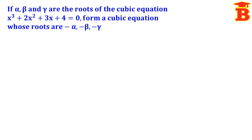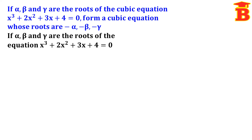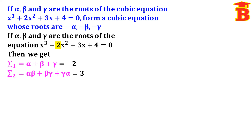Similarly, see the next problem. If alpha, beta and gamma are the roots of x cubed plus 2x squared plus 3x plus 4 equal to 0, form a cubic equation whose roots are minus alpha, minus beta, minus gamma. The equation is the same, so sigma 1 equals alpha plus beta plus gamma equals minus 2; sigma 2 equals alpha beta plus beta gamma plus gamma alpha equals 3; sigma 3 equals alpha beta gamma equals minus 4.